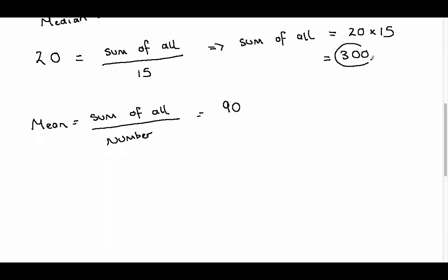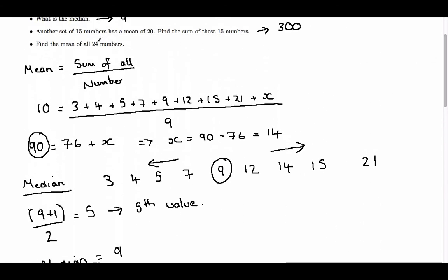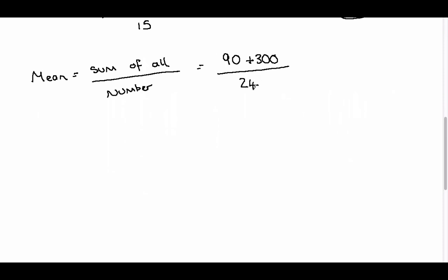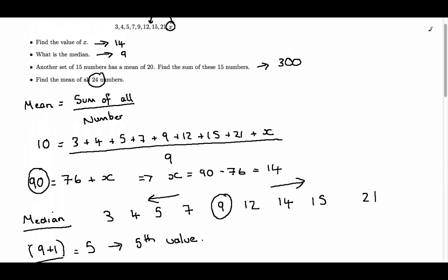For the second set, the sum of all of them was 300. And the total number of them is 24. So we need to divide by 24. So the mean is 390 over 24, which is 16.25. So the mean of all the numbers is 16.25.